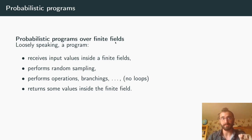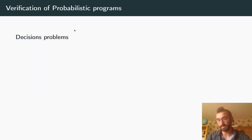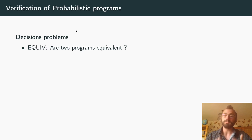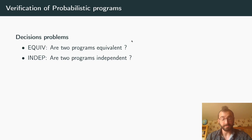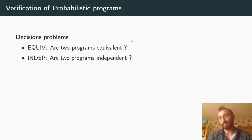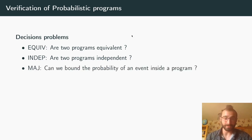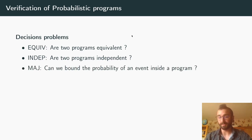For this kind of programs there are some classical verification questions, the most classical one being equivalence between programs. As we are probabilistic, it means equality of the distributions produced by the program. Coming from the context of computer security, we also want to look at independence — we want to prove that the distribution of a program is independent from some secret value — and we want to bound the probability of bad security events.